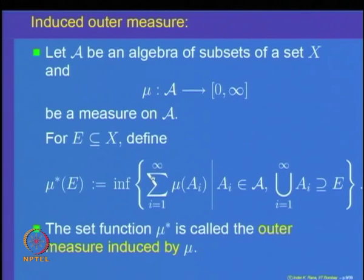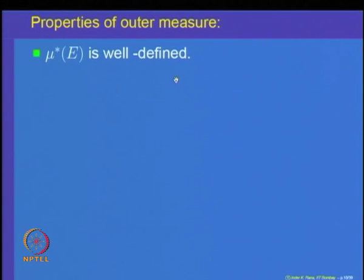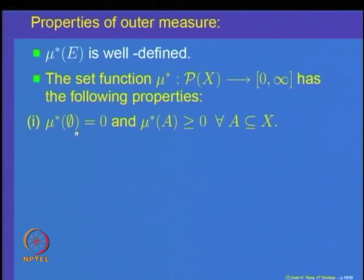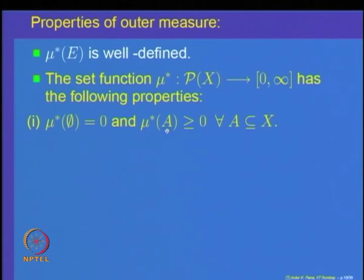The first property: μ*(∅) = 0, since ∅ belongs to the algebra and μ(∅) = 0, so the infimum is 0. For any set, μ* is always ≥ 0, since all numbers in the infimum are non-negative. So the first property is obvious.